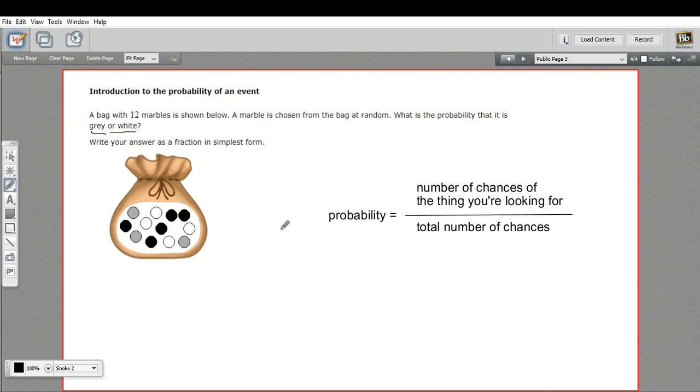The way to calculate probability, we usually express it as a fraction, although sometimes we convert those fractions into percents or decimals. But we'll start with a fraction today. We want to put the number of chances of the thing you're looking for, in this case gray or white marble, over the total number of chances. So in our case, it's going to be on the bottom, the total number of marbles, because you've got an equal chance of picking any of these 12 marbles. So we could make a fraction that's got 12 on the bottom.